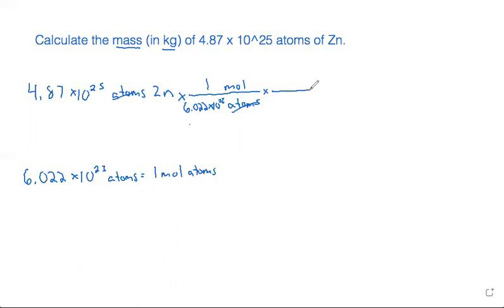Next we want to convert from moles to grams. So we need grams before we can convert to kilograms. And we can do that by using the molar mass from the periodic table is 65.38 grams is equal to one mole.